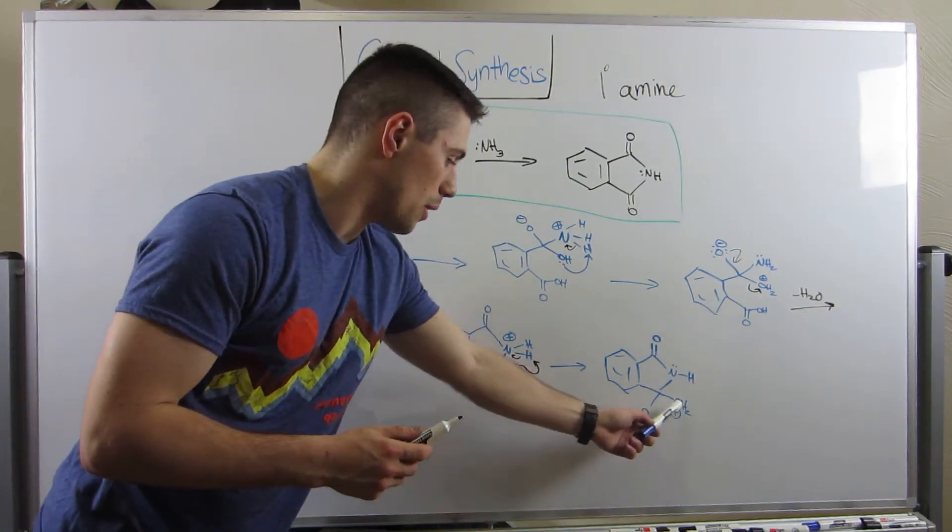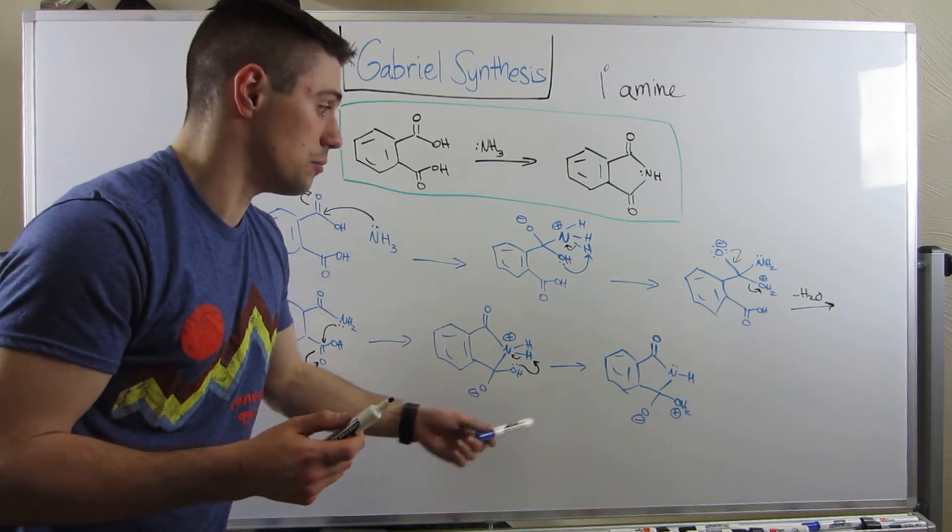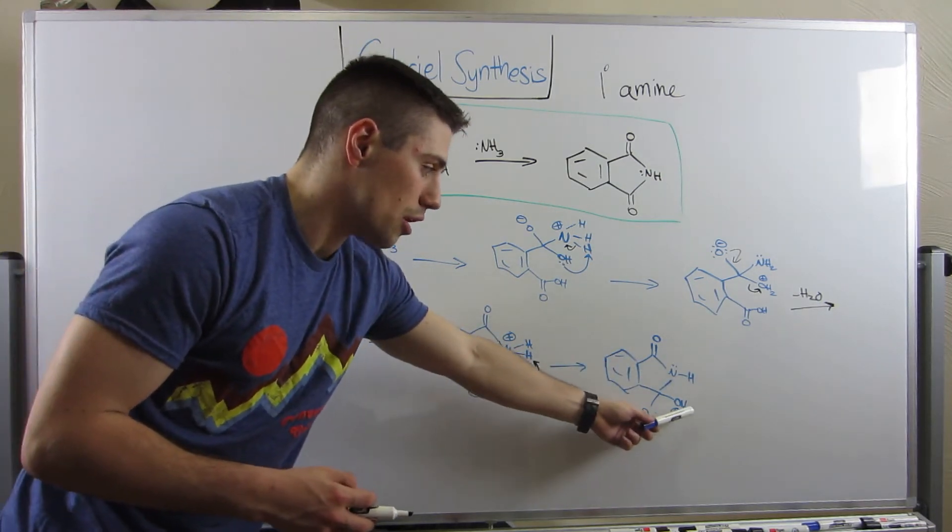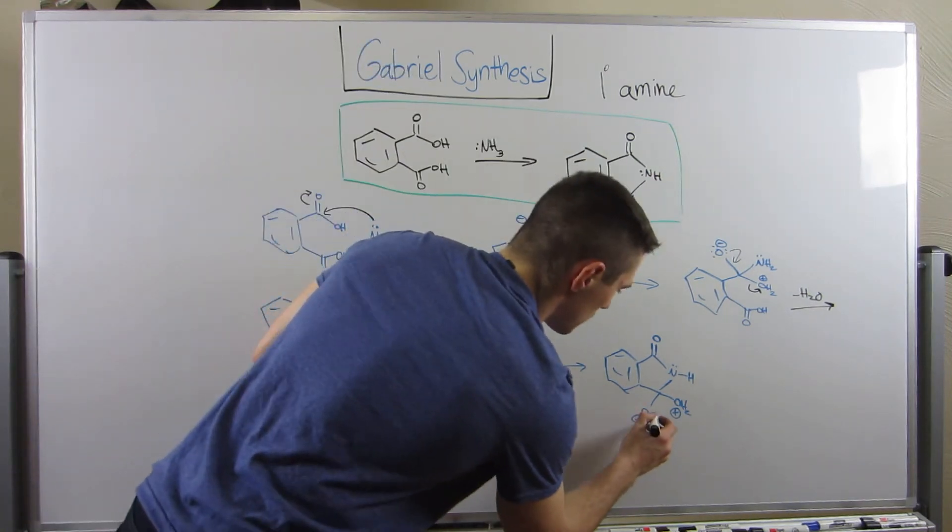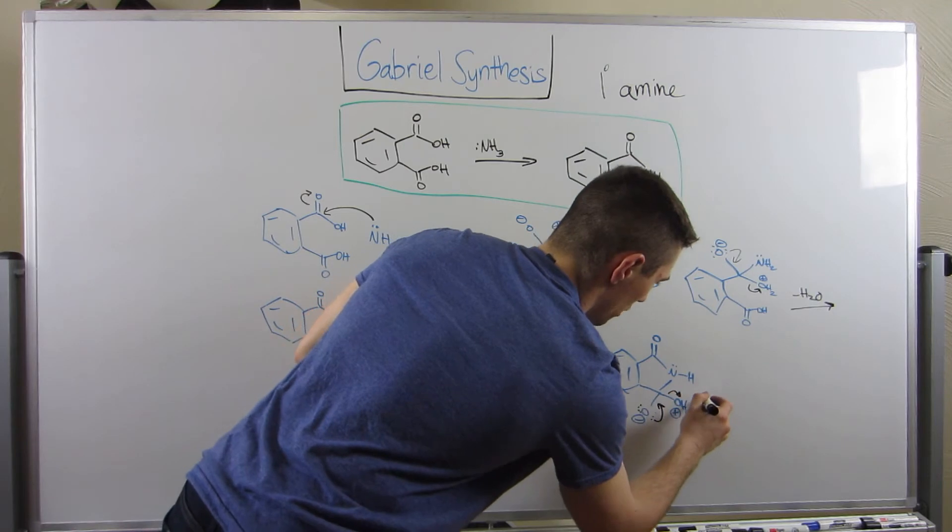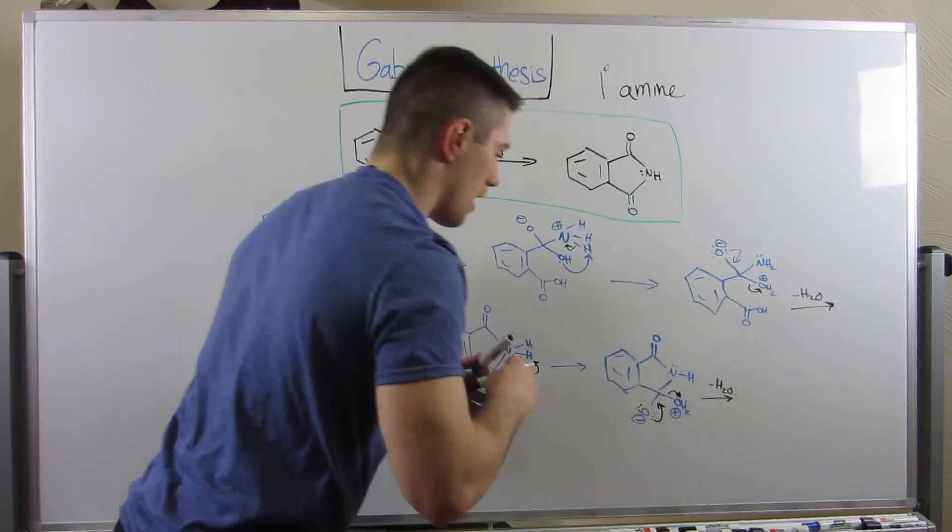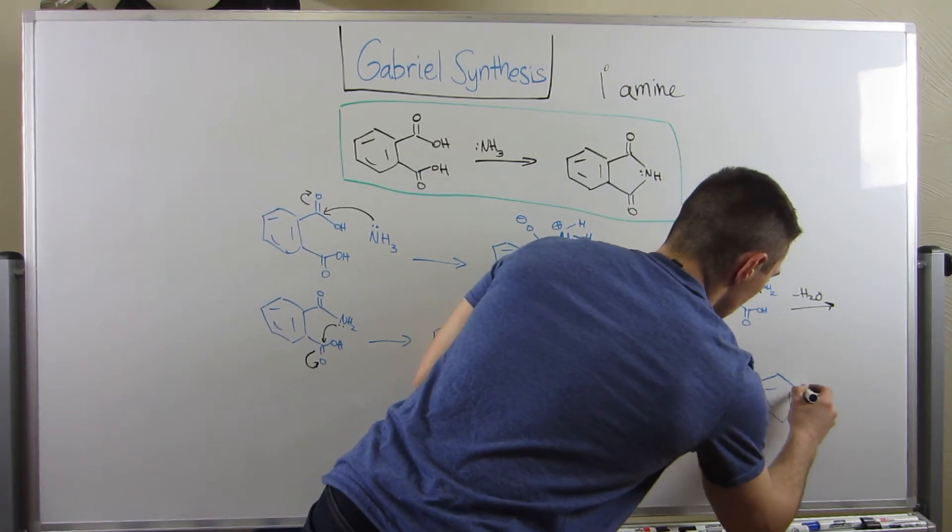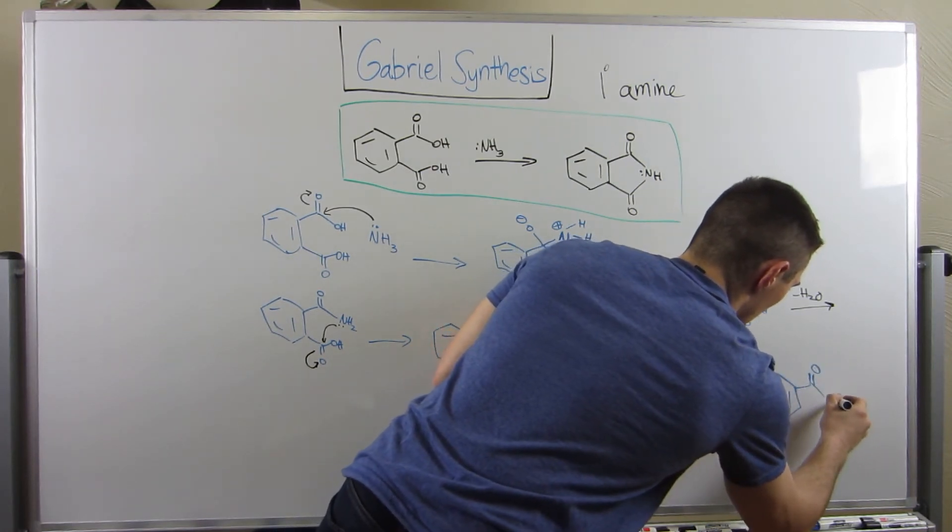Here's where we are. We now have OH2 plus water good leaving group. Our amine is now neutral. We need to give this water a reason to leave. Let's swing electrons down, eject water. Minus water for the second time. And now you can see we have reached our goal. Cool.